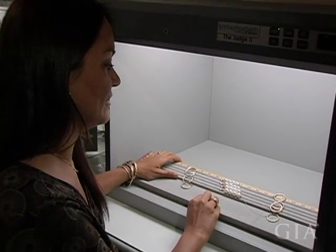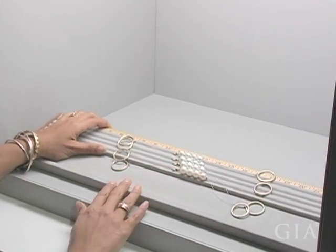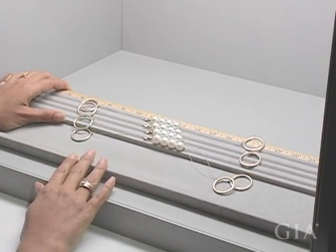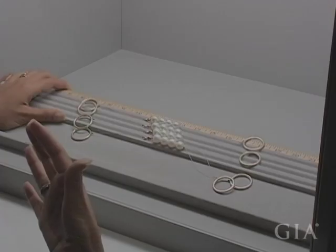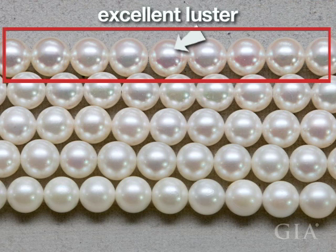Luster is basically the intensity of light reflected from a pearl surface. So if you have a single pearl or a strand, it's basically anything that's reflecting back to you. This is an excellent luster, and in this case you would expect to see bright and sharp reflections. The most noticeable thing when looking at the strand is how bright the reflection is — you can see this bright white little line that runs across the top of each of the pearls.